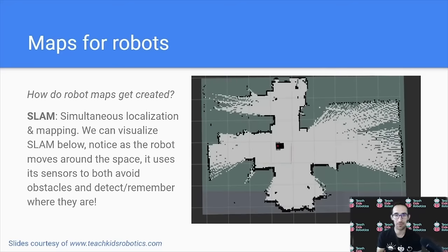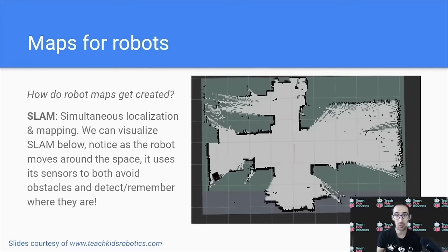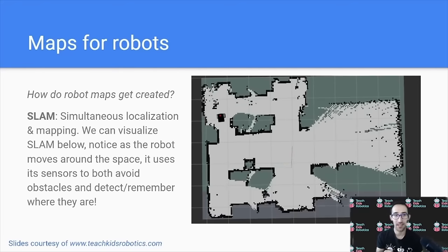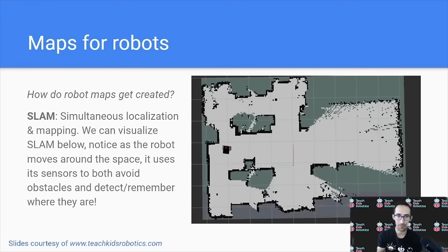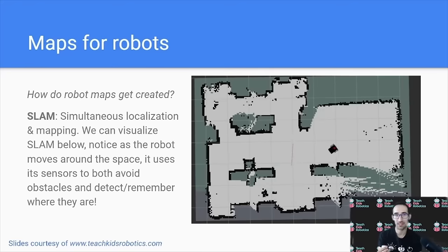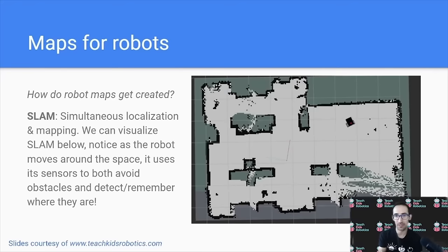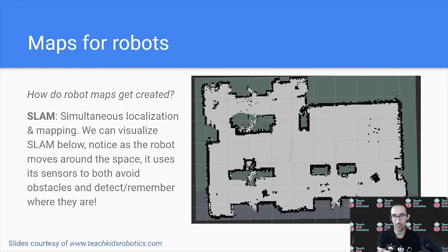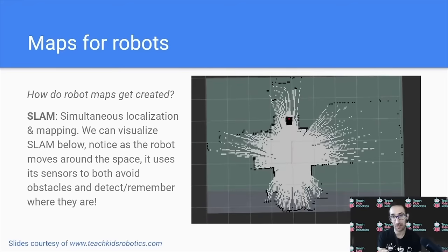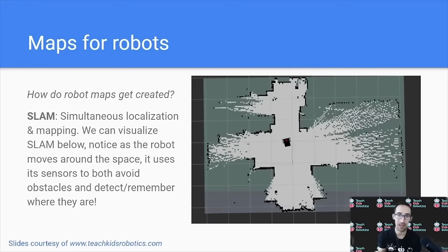Now, how do these robot maps actually get created? So a common technique to create a robot map is known as SLAM, or simultaneous localization and mapping. We can visualize SLAM on the right. Notice as the robot moves around the space, it uses its sensors to both avoid obstacles and remember key features that it's seen, such as walls and hallways. Using these features, it's able to determine where it is in its map that it's created.